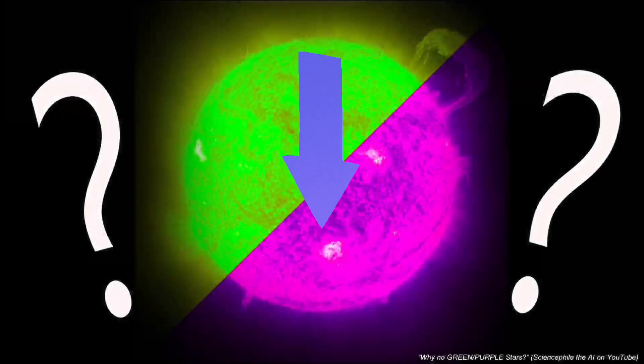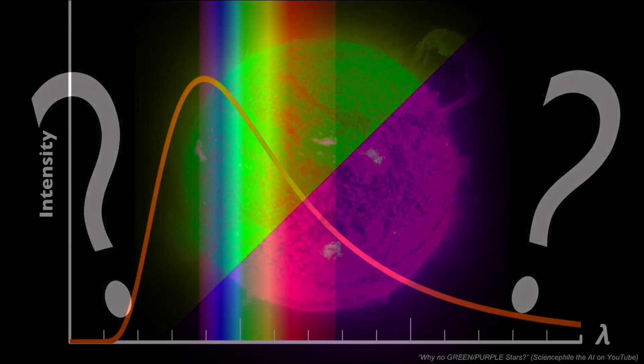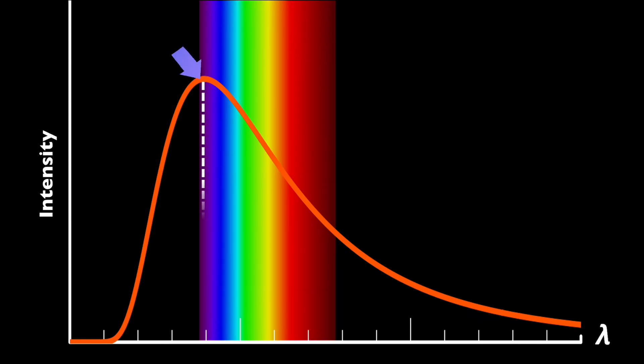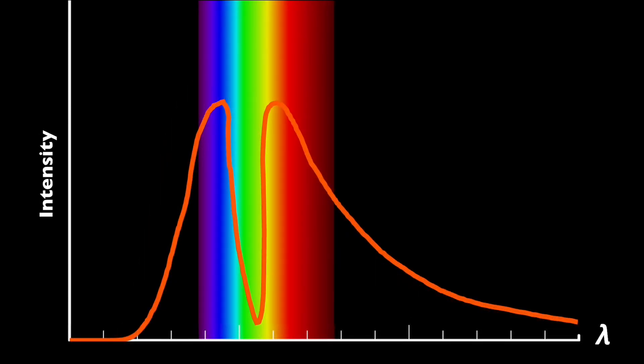Now, what if we wanted to see purple stars? We know that they exist, too. Their blackbody curves would look like this, with the peak wavelength in the violet portion of the visible range. But since our eyes can only perceive purple when there are equal amounts of red and blue light.